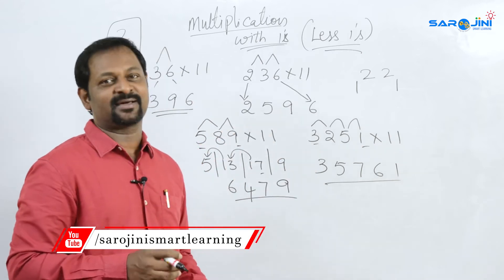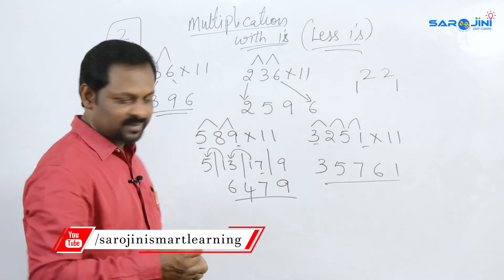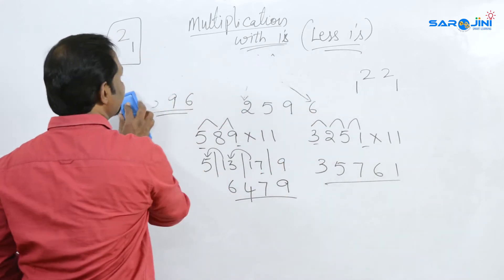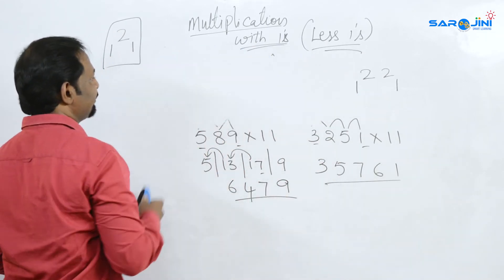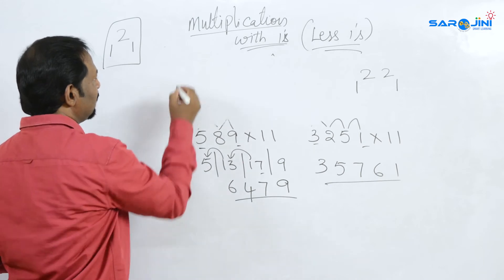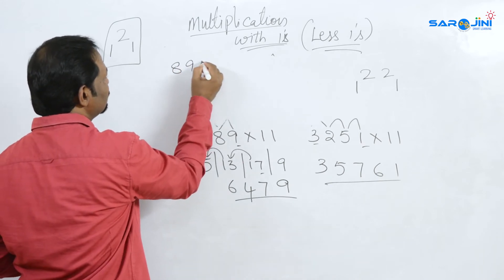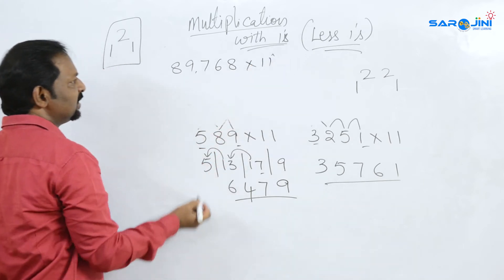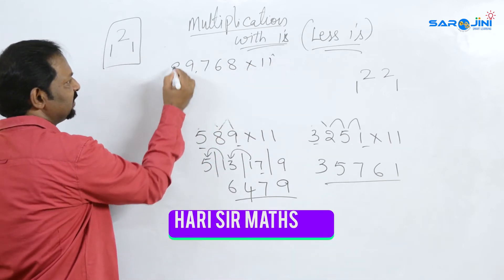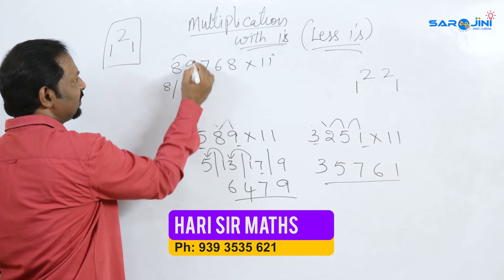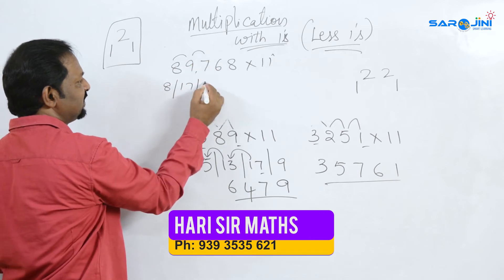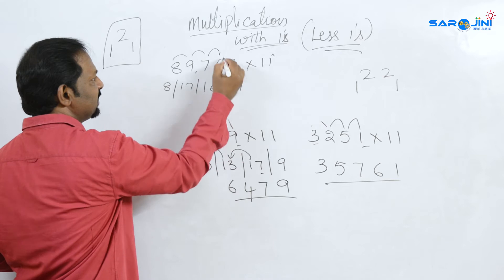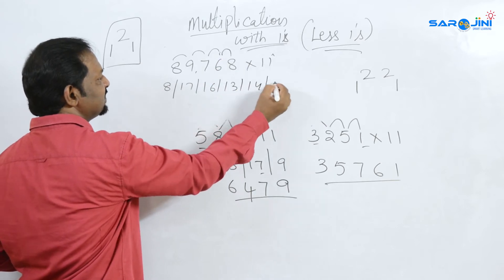One more example: 89,768 is multiplied by 11. What are we computing? 8. 8 plus 9 is 17. 9 plus 7 is 16. 7 plus 6 is 13. 6 plus 8 is 14. And this is 8.